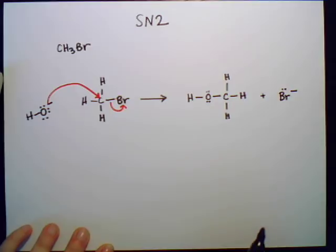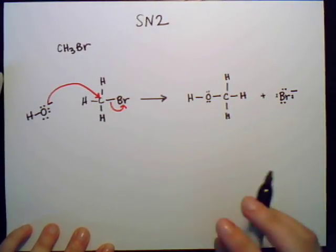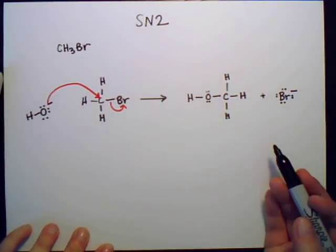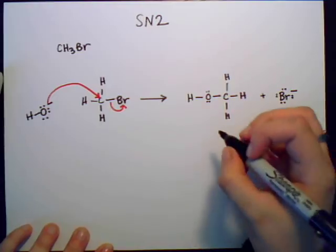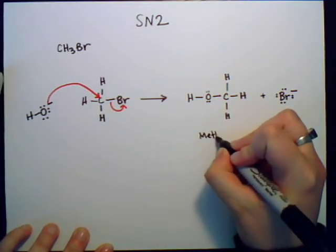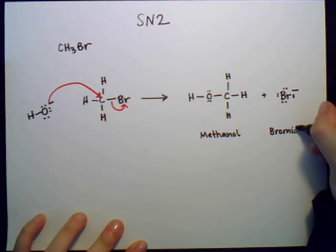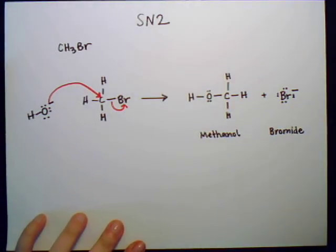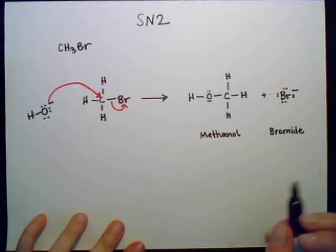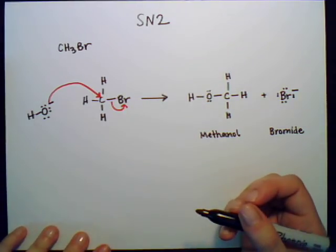So that's basically the SN2 reaction. And what are our products going to be? Methanol and just bromide—and bromide is just the ion.